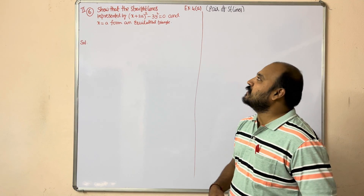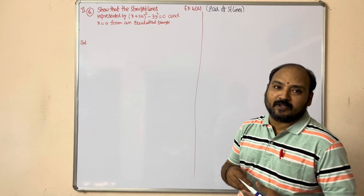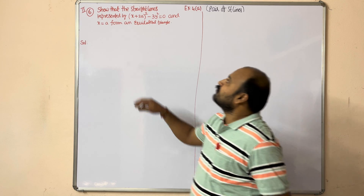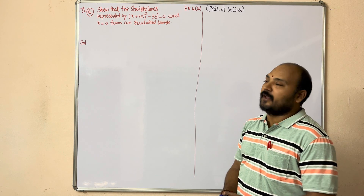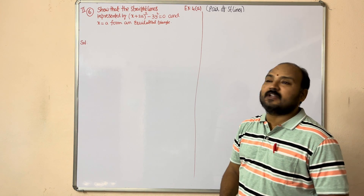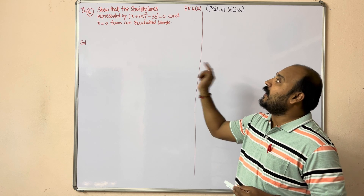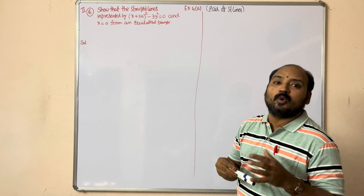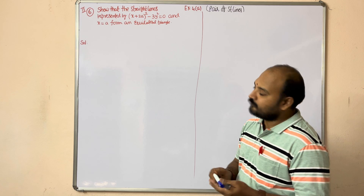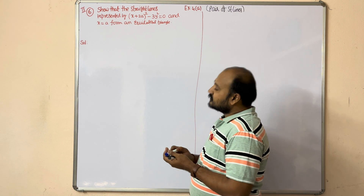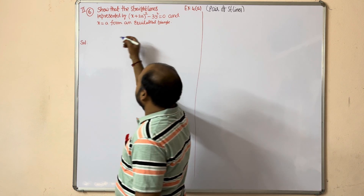Another important seven-mark question, dear students, from Pair of Straight Lines. Show that the straight lines represented by (x + 2a)² - 3y² = 0 and x = a form an equilateral triangle. Here the given pair of lines is the first set of given lines.